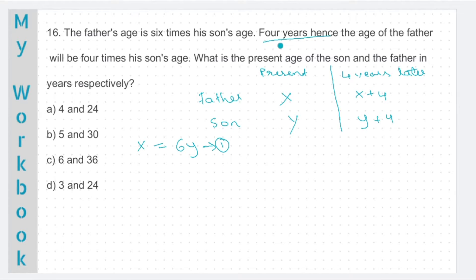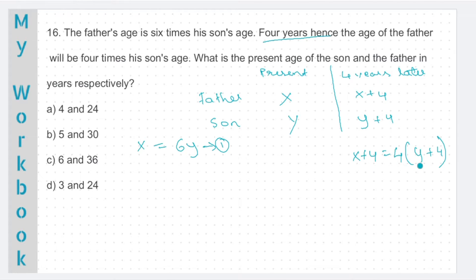The second line says 4 years hence, the age of the father will be 4 times his son's age. What happens after 4 years? The father's age, which is x plus 4, is 4 times his son's age at that point of time. So 4 years later, father's age is x plus 4, which is 4 times his son's age, y plus 4. We need to arrive at an equation from this. This can be written as x minus 4y equal to 12. So this is our second equation.